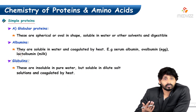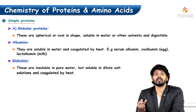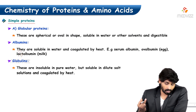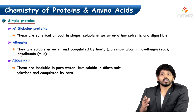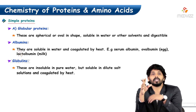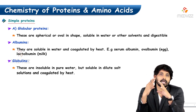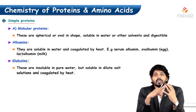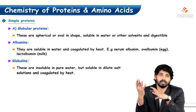Moving to simple proteins: we have seen the classical functional classification and now the chemical nature classification. Simple proteins — globular proteins — are spherical or oval in shape, easily soluble in water or other solvents, and are digestible.